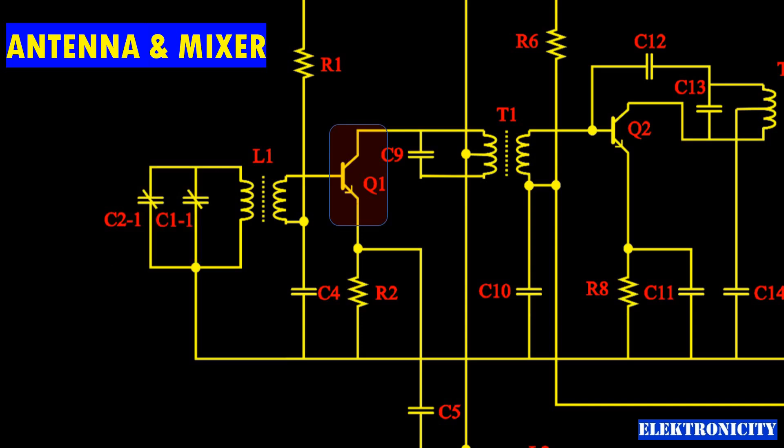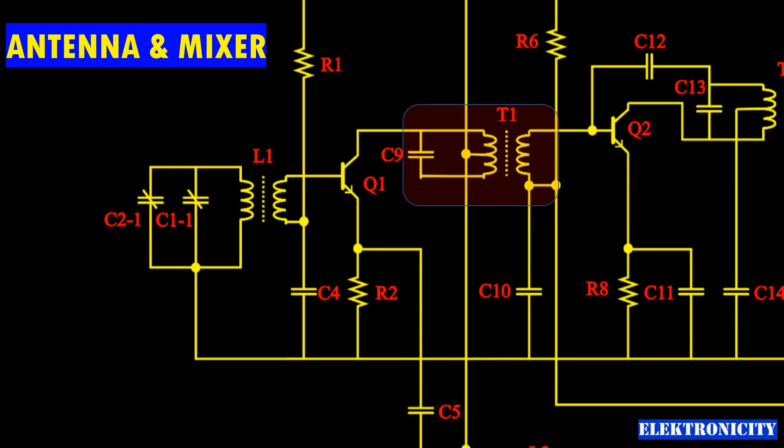The local oscillator signal is fed into the emitter via capacitor C5. The IF output is extracted from the collector through the transformer T1, which also functions as the first IF filter stage.